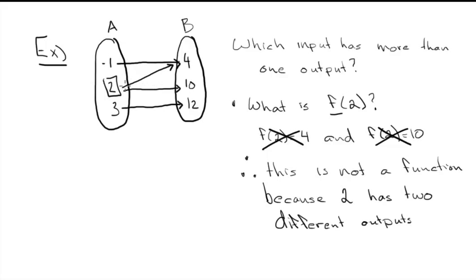So if you ever have one of the numbers in your domain has two arrows going out of it, basically that tells you not a function. That's how you're going to recognize a non-function in a mapping diagram.